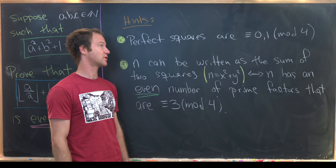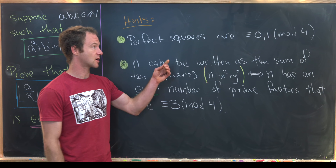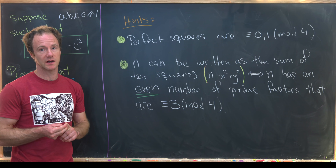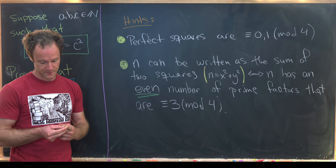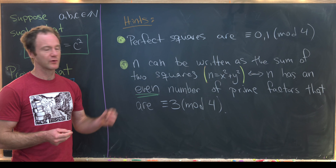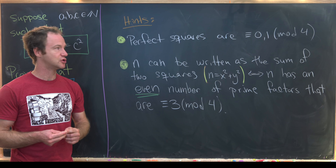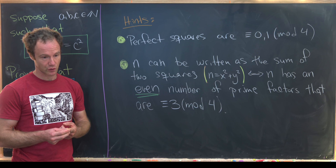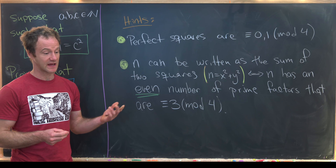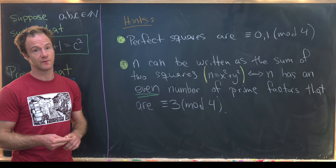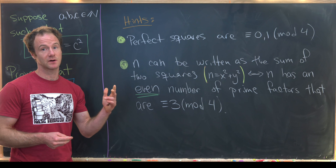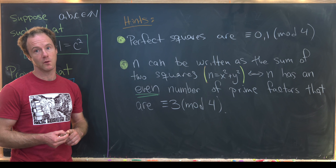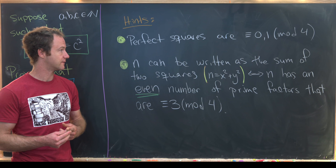The first hint says that perfect squares are congruent to zero or one mod four. Just take an even number and square it — that'll be a multiple of four. If you take an odd number and square it, it will be one more than a multiple of four.